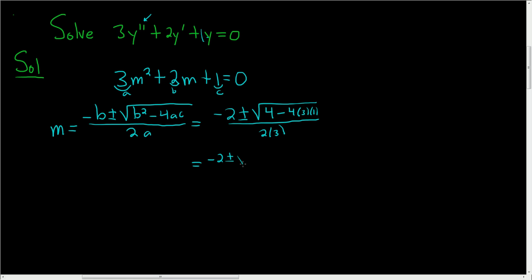So this is equal to negative 2, plus or minus the square root, 4 minus 12. 4 times 3 is 12, so this is 4 minus 12, so we get negative 8. It's all being divided by 2 times 3, which is 6.